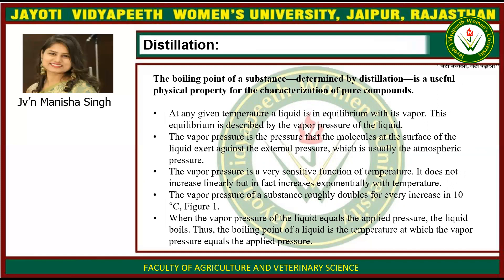At any given temperature, a liquid is in equilibrium with its vapor. This equilibrium is described by the vapor pressure of the liquid. The vapor pressure is the pressure that the molecules at the surface of the liquid exert against the external pressure, which is usually the atmospheric pressure. The vapor pressure is a very sensitive function of temperature — it does not increase linearly but increases exponentially with temperature, roughly doubling for every increase of 10 degrees Celsius, as shown in figure 1.